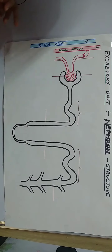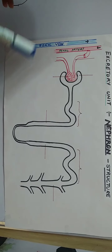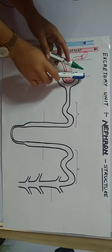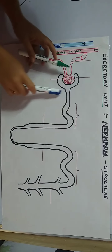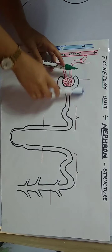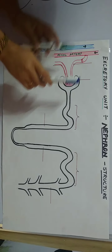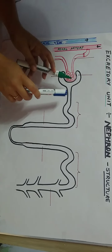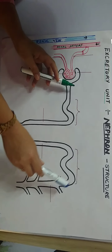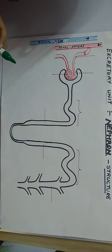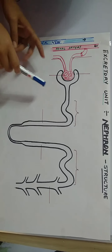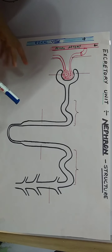This nephron is actually divided into two parts. In higher classes you will study that these two parts — the cup-shaped starting part of the nephron is called the Malpighian capsule, and the convoluted tubular system is called the renal tubule. But I will tell you which labels you have to learn according to your 10th class.